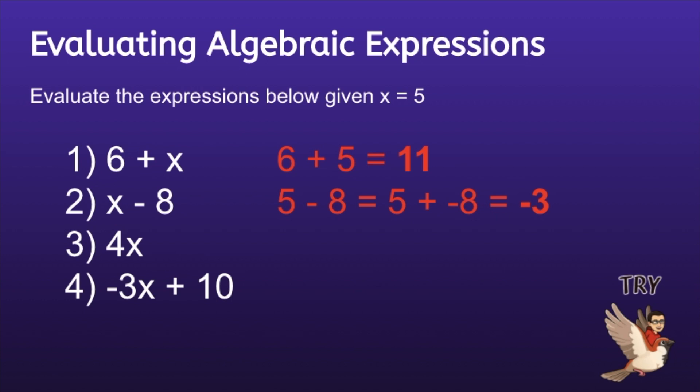Number 3: 4x. After substituting, we will have 4 times 5, which is equal to 20. And number 4: negative 3x plus 10. After substituting, we will have negative 3 times 5 plus 10, which is equal to negative 5.